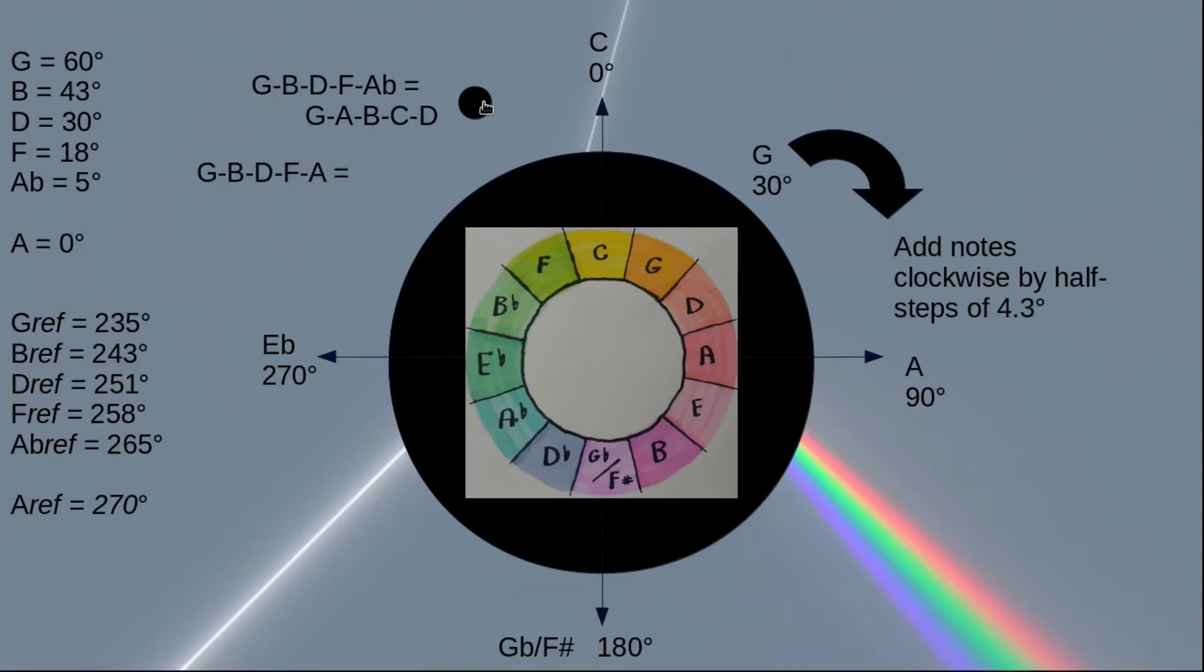And then if we do that with G, B, D, F, A-natural, it's really cool because we get the same notes on the bottom, of course, but instead of D we get an E-flat. So now we have the same idea before except we also have a tritone built into it, which I love.